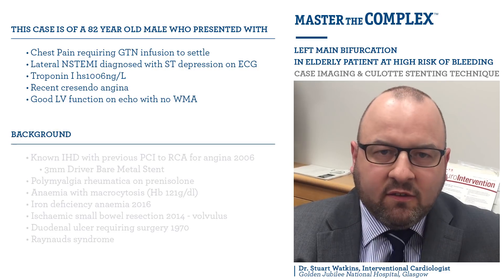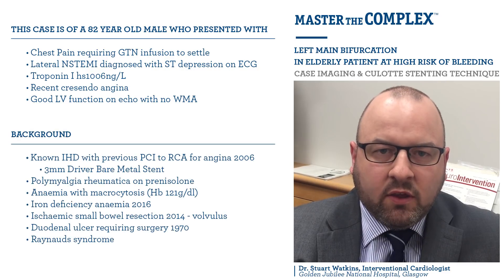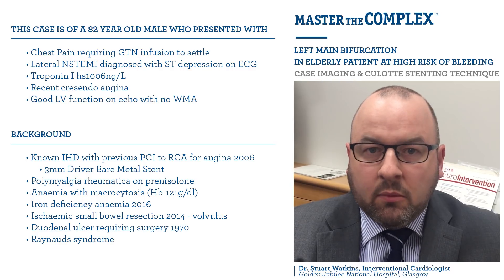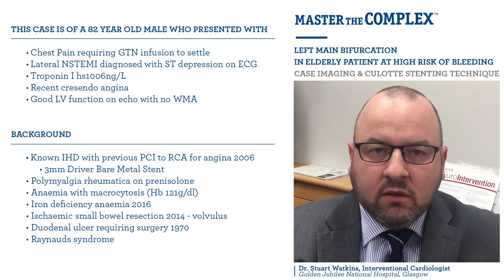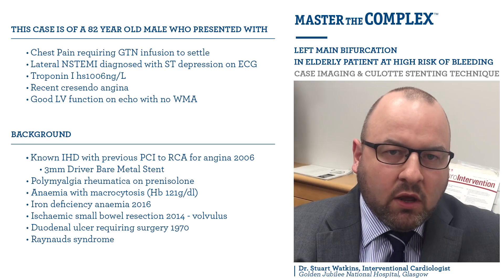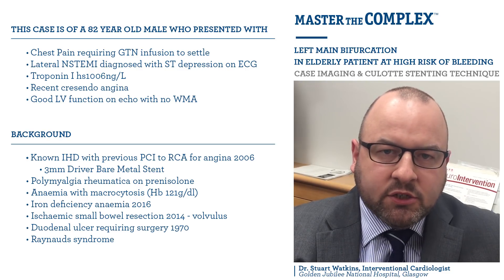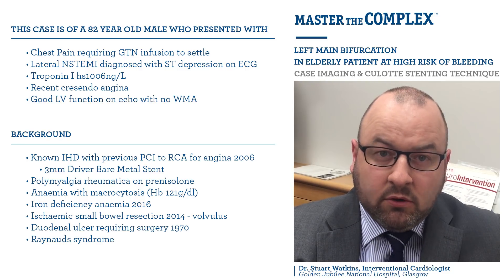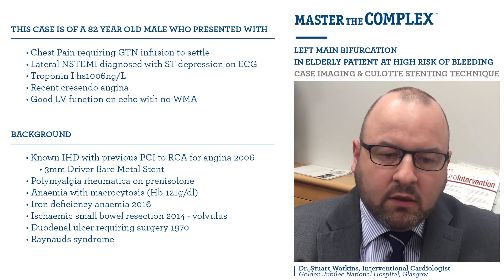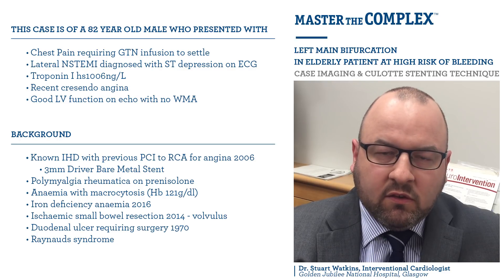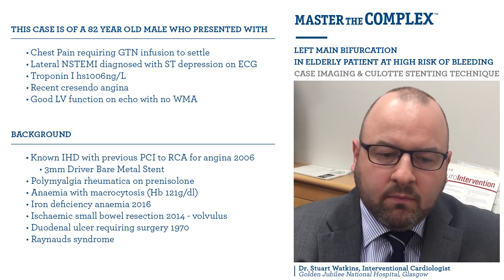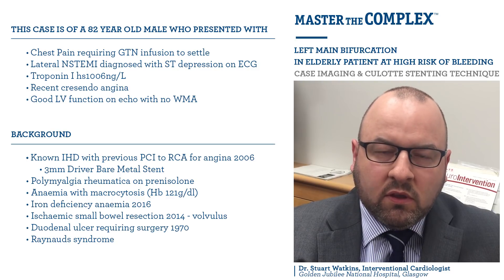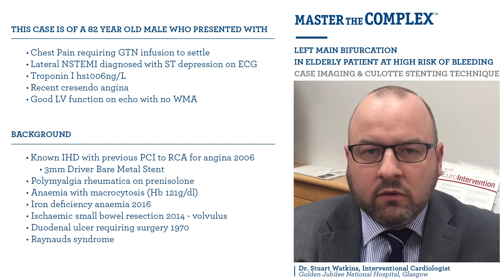The gentleman has quite an extensive past history in that he had angina in 2006 requiring a bare metal stent implanted into his right coronary artery. He also has a history of long-term steroid use for polymyalgia rheumatica, and a history of anaemia with a haemoglobin of 121. Of significant note, he had a previous ischaemic small bowel resection due to a volvulus.